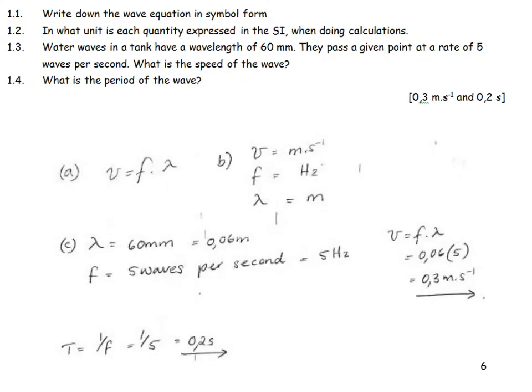Write down the wave equation in symbol form. It's V is equal to lambda F or F lambda. That's called the wave equation. In what unit is each quantity expressed? The speed must be in meters per second, frequency in hertz, and wavelength in meters.